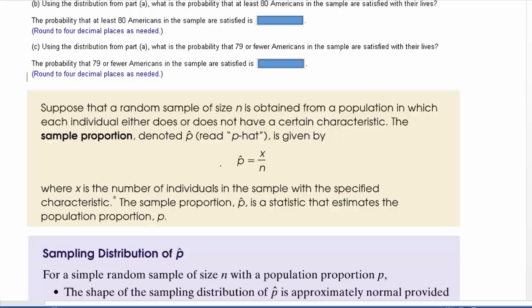P-hat is just x over n. x is the number of individuals of the thing you care about over the total sample size, n being the total sample size. So that's what our p-hat is.